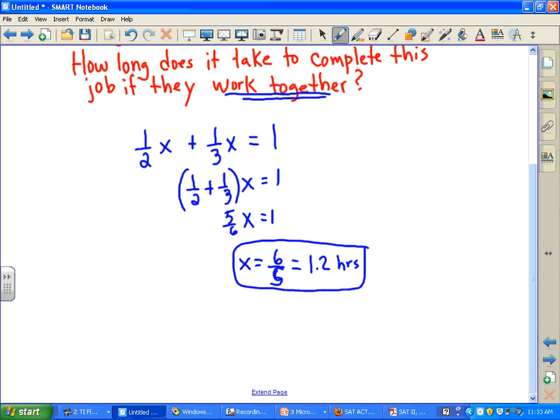Okay, so this would be the answer. Now let's say that a person, instead of Andy, does the job in a hours, and Billy does the job in b hours. So we could have one over a plus one over b is equal to the time it takes working together.